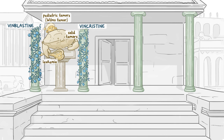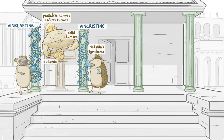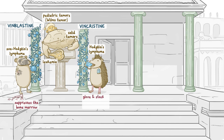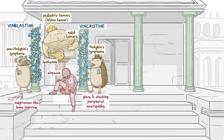For drug-specific indications, a hedgehog represents Hodgkin's lymphoma — this one is eating the crystal fruits from vincristine. An unlucky hedgehog ate bomb fruits from vinblastine and all his spines blew off, representing non-Hodgkin's lymphoma. His shattered bones on the ground help you remember vinblastine suppresses the bone marrow. For vincristine, the hedgehog's legs are covered in bandages for the glove and stocking peripheral neuropathy. For shared side effects, a bald man sits by the statue for alopecia, and he's vomiting at its foot for gastrointestinal side effects.